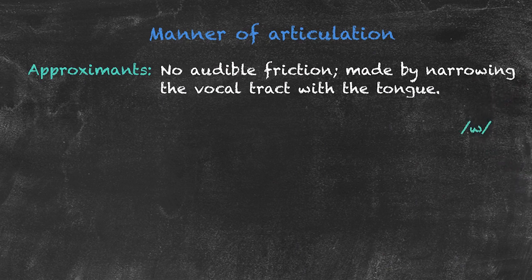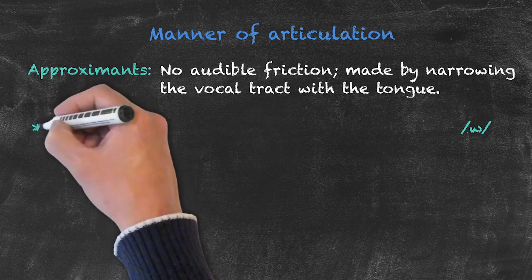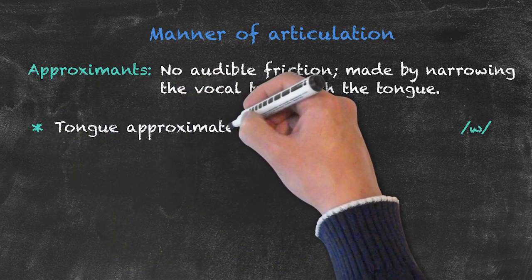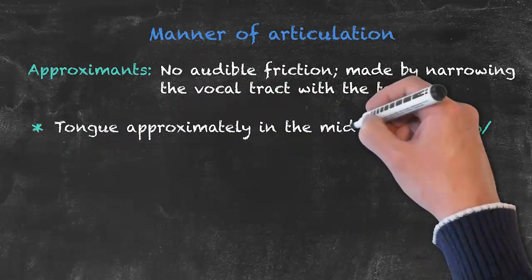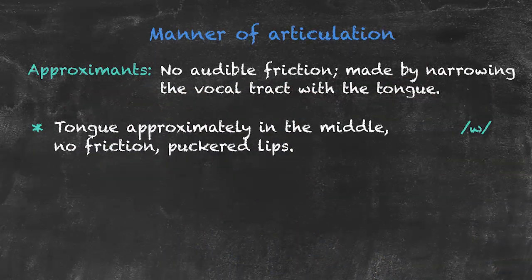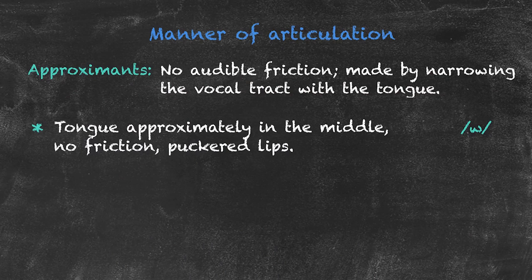These sounds include W. The place of articulation is in the front; however, for the manner of articulation, our organs are approximately in the middle of our mouth, not causing any vibration with any other vocal organs, and that produces the sound W.